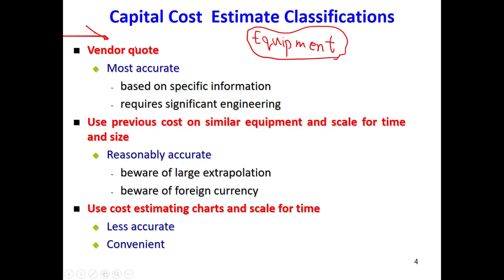The first and simplest method is a vendor quote. If you want to buy a heat exchanger or compressor, you contact vendors who import equipment. You tell them the specification you need and ask for a cost. They contact suppliers, find companies that can provide the equipment, and give you a very accurate, up-to-date price. To give you a price, the vendor will ask for exact specifications: size, heat duty, material, operating pressure, and so on.